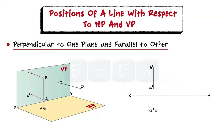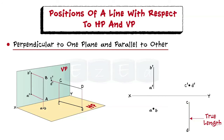For the second case, the representation of a line is as shown and its orthographic pattern is also shown. In this case, the front view is a point and the top view is a vertical line which is the true length.